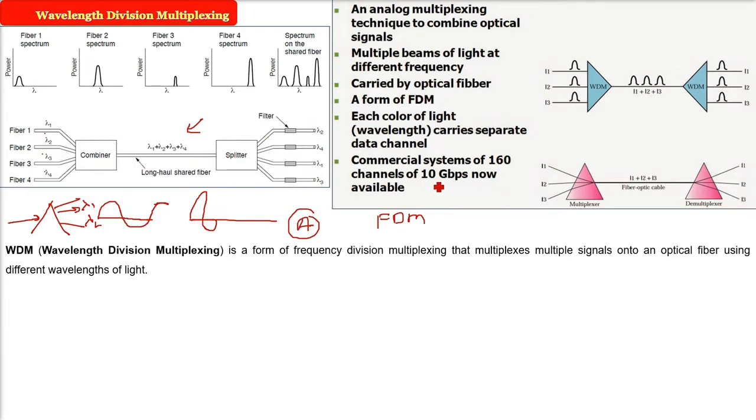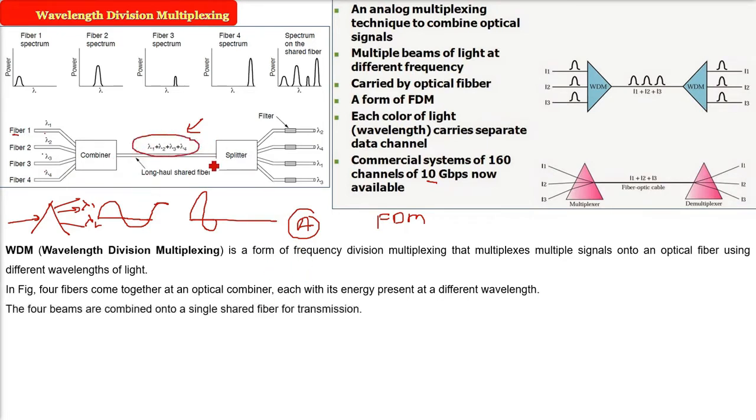Commercial systems have right now 160 channels, each channel giving up to 10 Gbps. So, here you see four fiber come together at an optical combiner and each are combined, lambda 1 to lambda 4, they are added and each with its energy present at a different wave depth. The four beams are combined on a single shared fiber for the transmission. This is a long haul shared fiber.